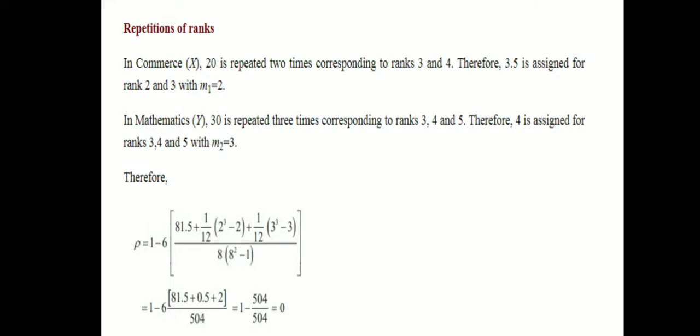Now note the repetitions: In Commerce, 20 is repeated 2 times corresponding to ranks 3 and 4, so 3.5 is assigned with m1 = 2. In Mathematics, 30 is repeated 3 times corresponding to ranks 3, 4, and 5, average is 4 assigned, with m2 = 3. Now apply the formula: rho = 1 minus 6 times [summation di squared plus correction factors] divided by n(n squared minus 1).